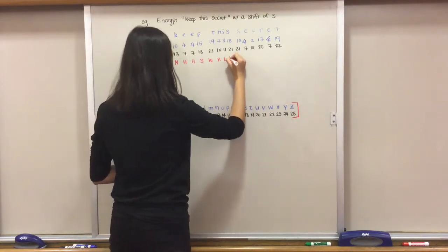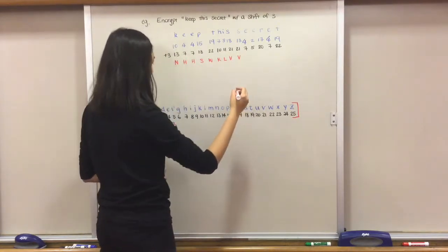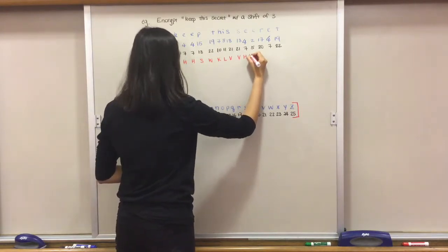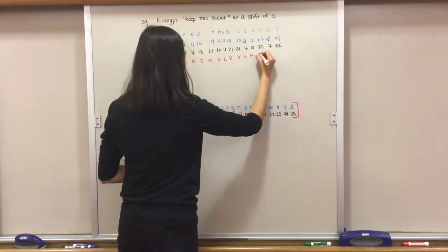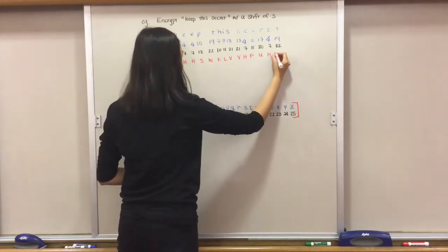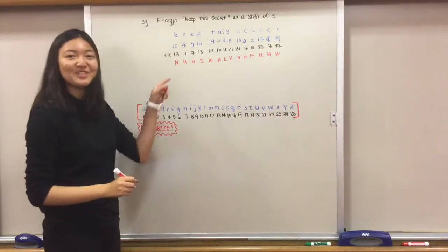These are both V's, 7 is H, 5 is F, 20 is U, 7 is H again, and 22 is W. Boom, so much quicker.